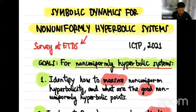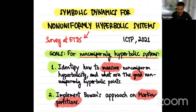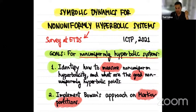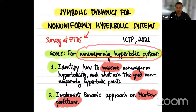Let me start here with the notes I have prepared, which I can make available after the lecture so you can more easily follow. This mini-course, which I plan in four to five lectures, has two main goals. Both goals are aimed at better understanding the class of systems called non-uniformly hyperbolic. The first goal is to identify exactly how this non-uniform hyperbolicity can be measured — using some parameters to say when a point has good non-uniform hyperbolicity.